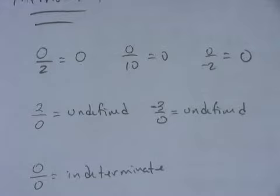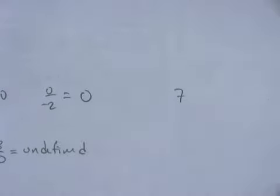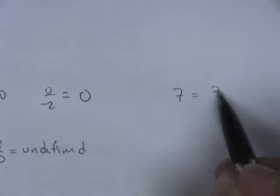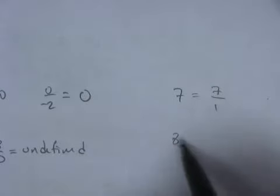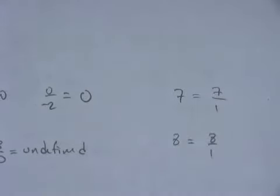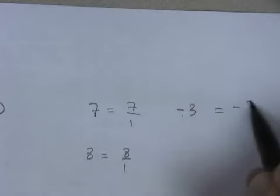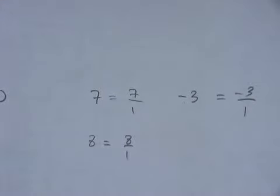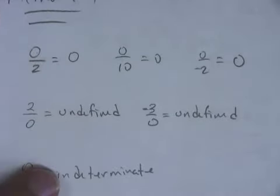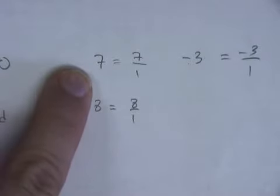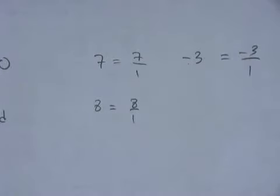You've got to know those three things. A couple other pieces of information: if I give you a number like 7, you need to know that 7 can always be written over 1. If I give you 8, that's 8 over 1. If I give you negative 3, that's negative 3 over 1. So any number I give you can be rewritten as a fraction — you simply put it over 1. So far, four things you've got to know: 0, undefined, indeterminate, and that any number can be written as a fraction by putting it over 1.